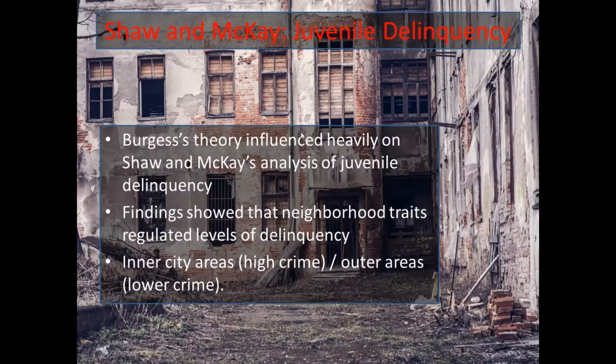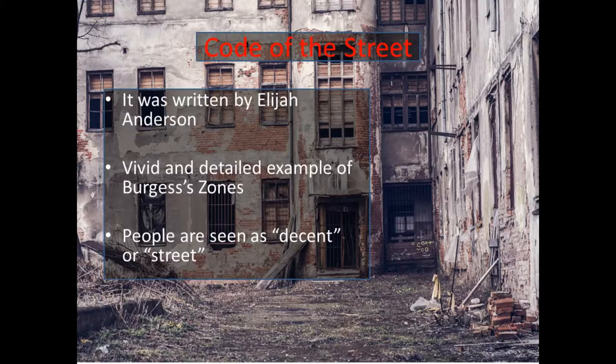We already talked about how the book relates to Burgess's zones. Now, the book also talks about how people are labeled. People in the book are labeled as either decent or street. These labels are used by the residents of the inner-city communities in the transition zones to categorize themselves and one another — essentially to understand what side you're on.